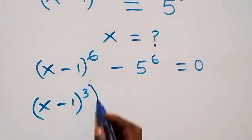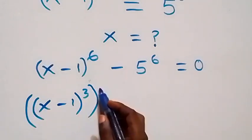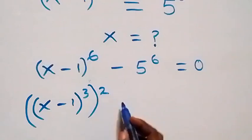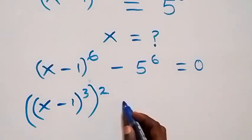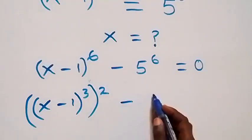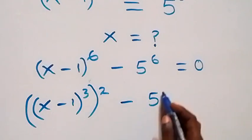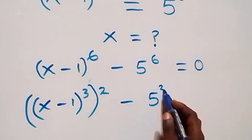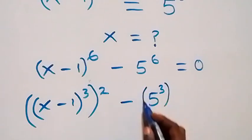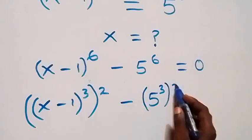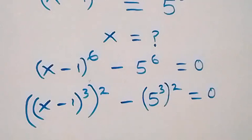From here, we can write this as x minus 1 raised to power 3, which is now raised to power 2 — because 2 times 3 gives us 6 — then the same thing here: minus 5 raised to power 3, then raised to power 2, equals to 0.